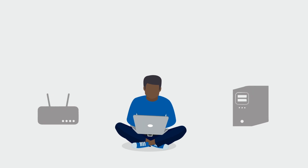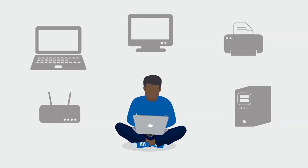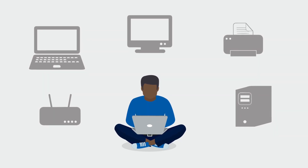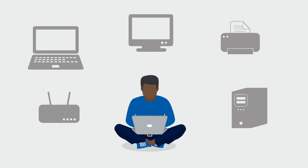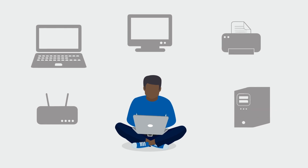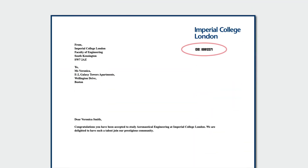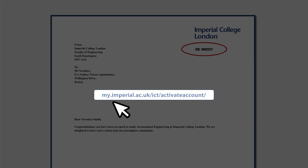To use our computing facilities, you'll need to activate your college account. You can do this before you arrive. You'll need your CID number, which can be found on your college acceptance letter. When you're ready, go to this page and follow the instructions.